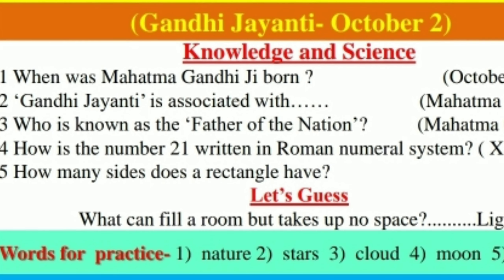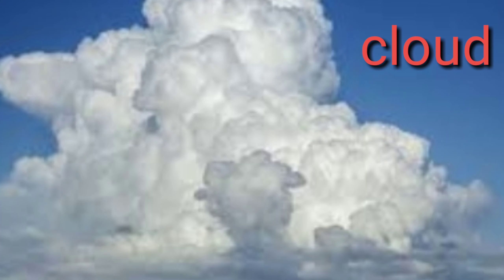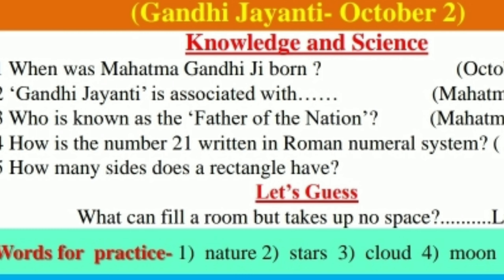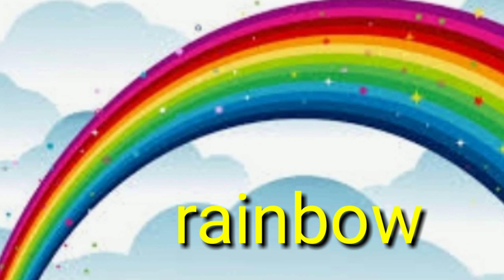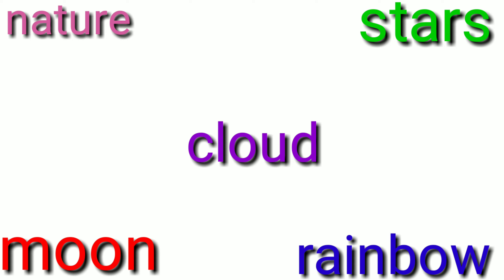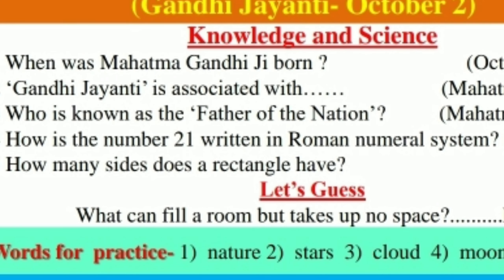Words for practice. First one is: nature. Second is: S-T-A-R-S, stars. Third one is: C-L-O-U-D, cloud. Fourth one is: M-O-O-N, moon. And fifth one is: R-A-I-N-B-O-W, rainbow. Let's repeat: nature, stars, cloud, moon, rain.